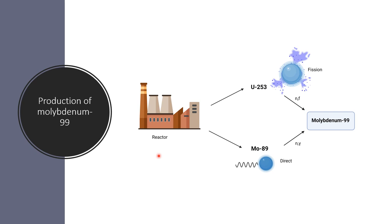The production of molybdenum can happen in two ways, mostly reactor based. Uranium-235 is bombarded with neutrons, undergoes fission, and produces molybdenum-99 among other radionuclides. You can also put molybdenum-98 into the reactor and bombard it to get molybdenum-99, but the best way is through nuclear fission as it gives the highest activity, resulting in better-behaving generators.